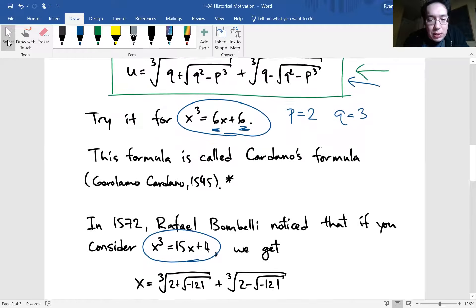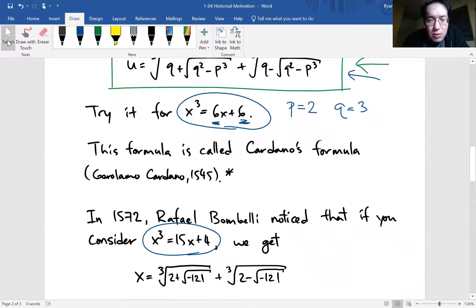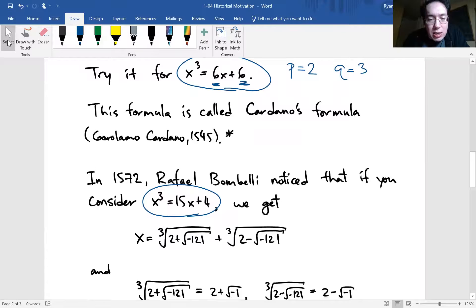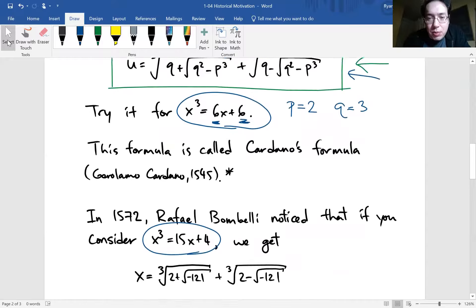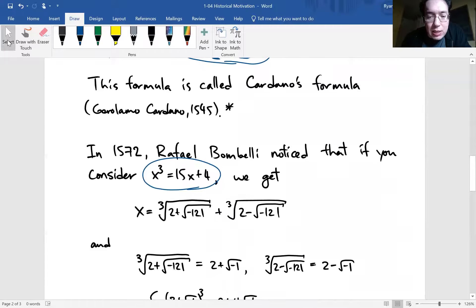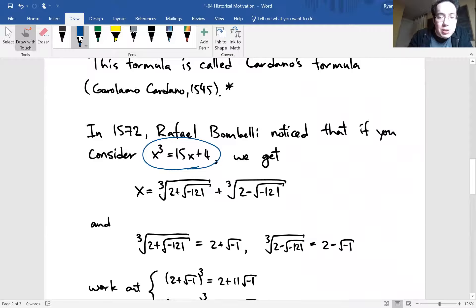So using the formula, cube root of 2 plus the q². So q squared, q is 2. So 4, minus 5³, 125. So 4 minus 125 is going to be negative 121. Okay. And the second cube root looks very similar, except for plus is replaced with minus there. Okay.